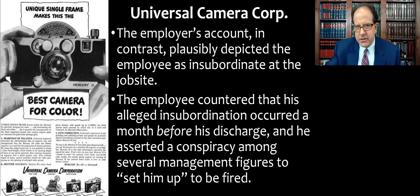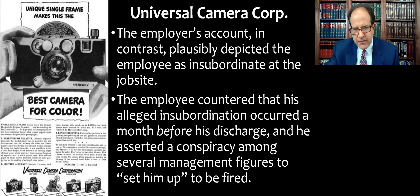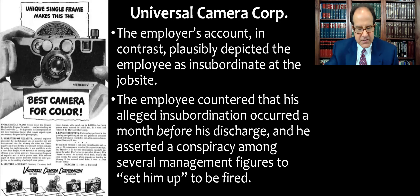The employer had a different story. The managers at Universal Camera Corp plausibly depicted the employee as just a troublemaker — he was insubordinate at the job site, and that's why they fired him. Under the National Labor Relations Act, employers can't fire a worker for being involved in the union or testifying at a hearing. So if it was a retaliatory discharge, he would get his job back; if he was just a bad worker or insubordinate, they are allowed to fire him. The employee countered that the alleged insubordination had occurred a full month before his firing and therefore couldn't have been what prompted it. He also said there was a conspiracy among several management figures to set him up to be fired.